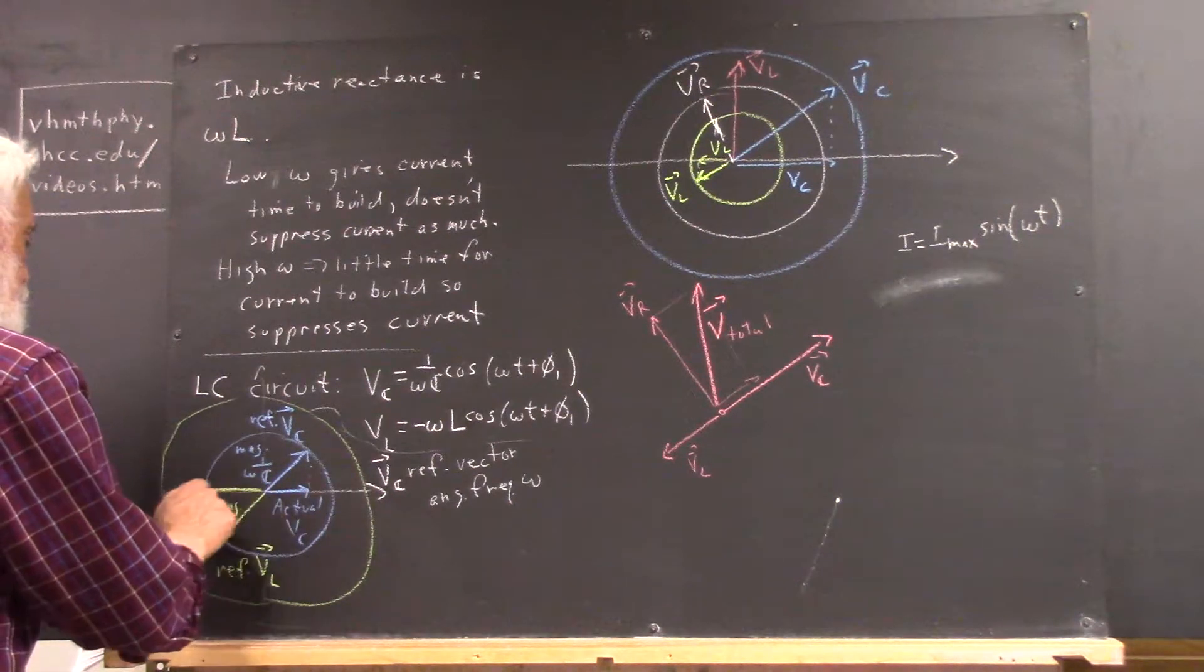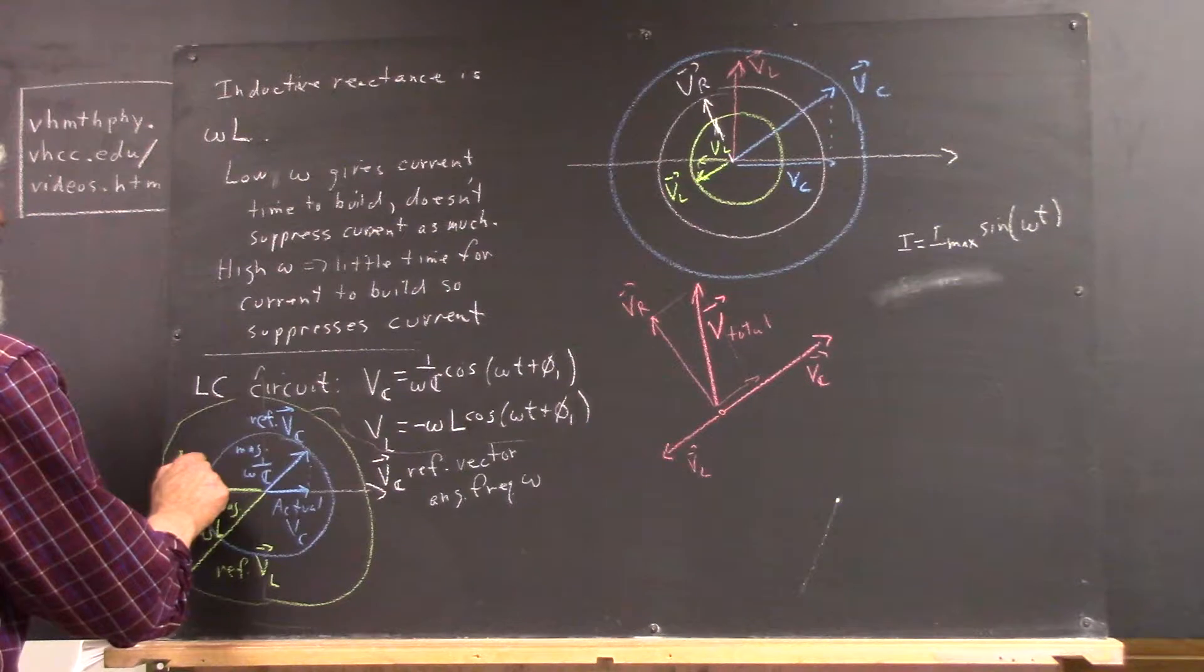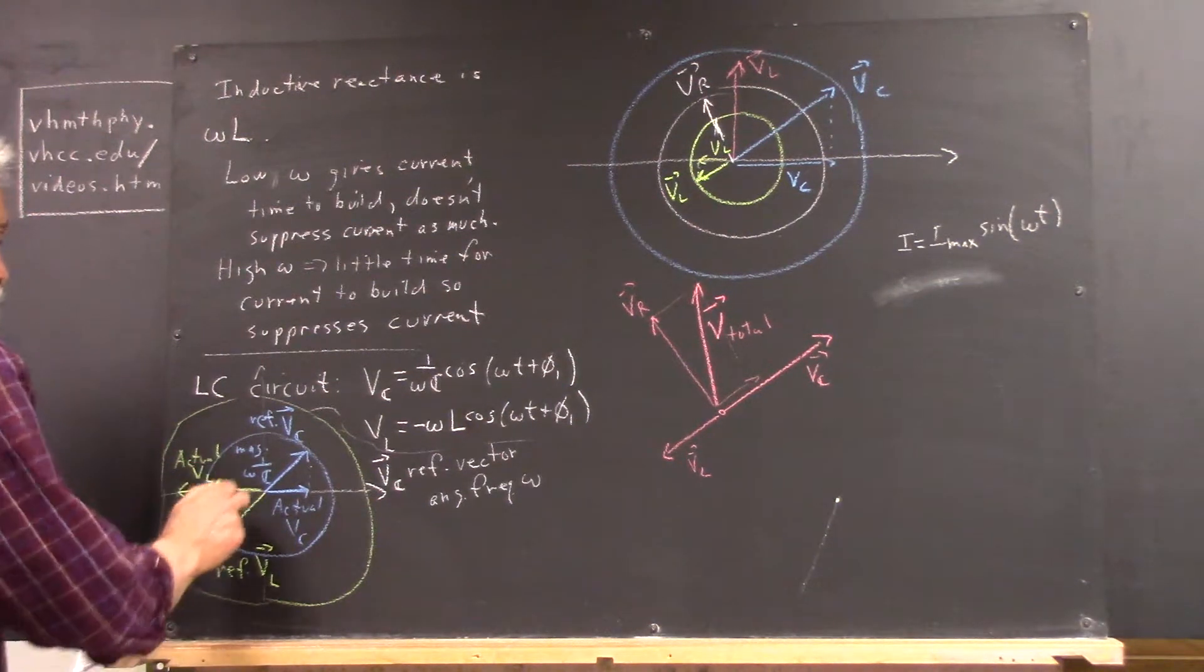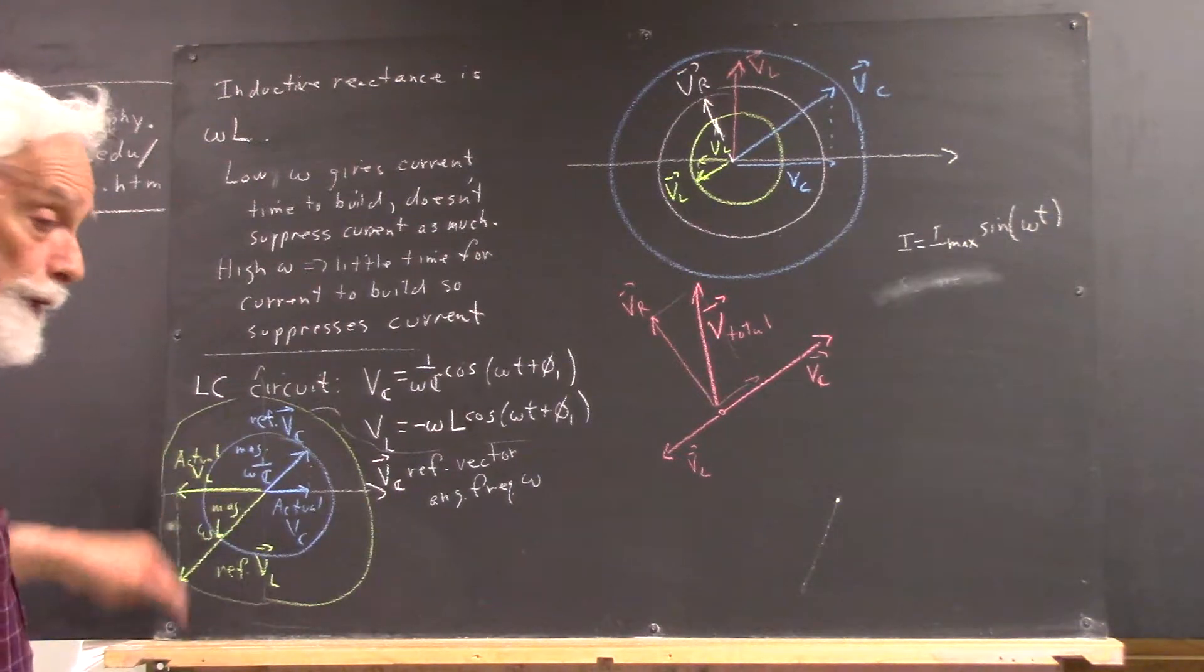Well, this means, then, that your actual V sub L could be represented by this vector.